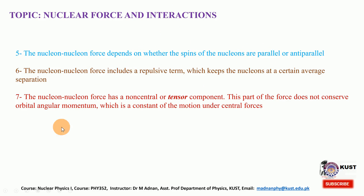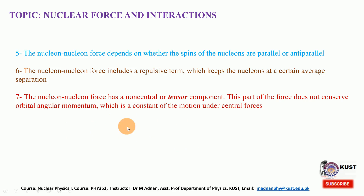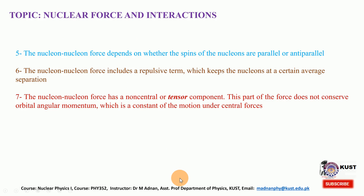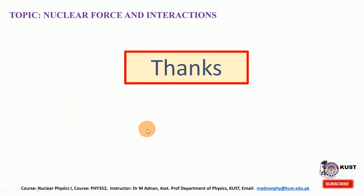The nuclear-nuclear force has a non-central, or tensor, component — a part of the force that does not conserve orbital angular momentum, which is a constant of motion under central forces. This non-central component means the nucleon-nucleon interaction is not along the line joining the two nucleons, but has a spin or tensor component due to spin orientation. Based on these introductory remarks regarding the interaction of nucleons and the nature of the nuclear force, we will next discuss the deuteron — the simplest nucleus for studying nucleon-nucleon interaction. Thank you for your time.